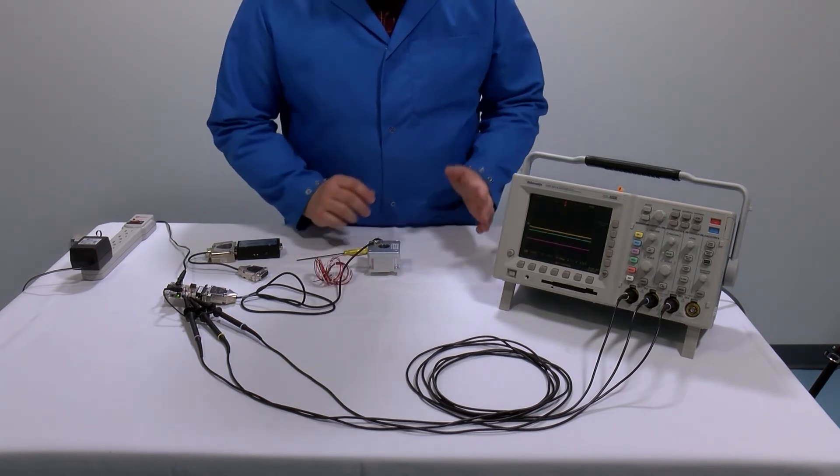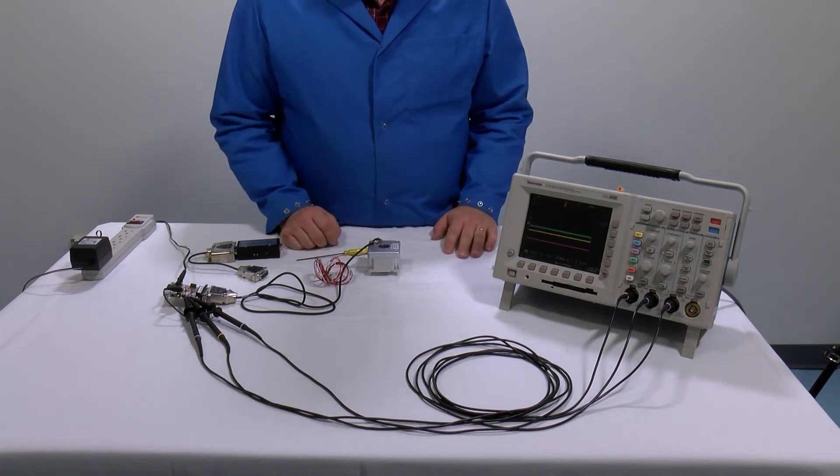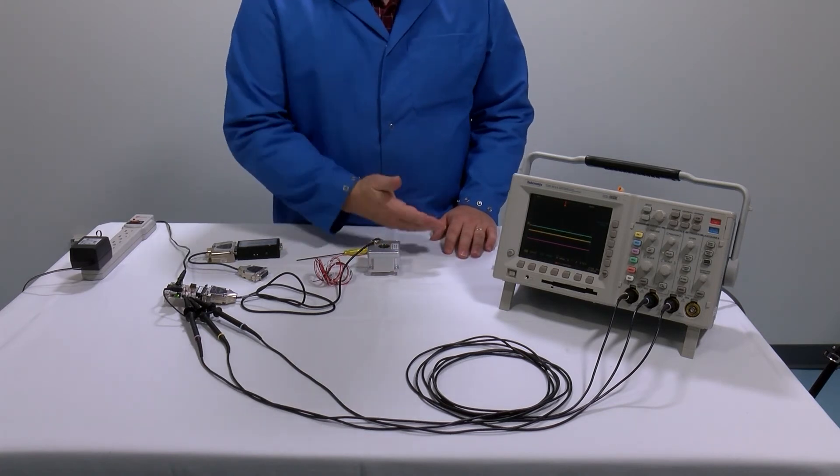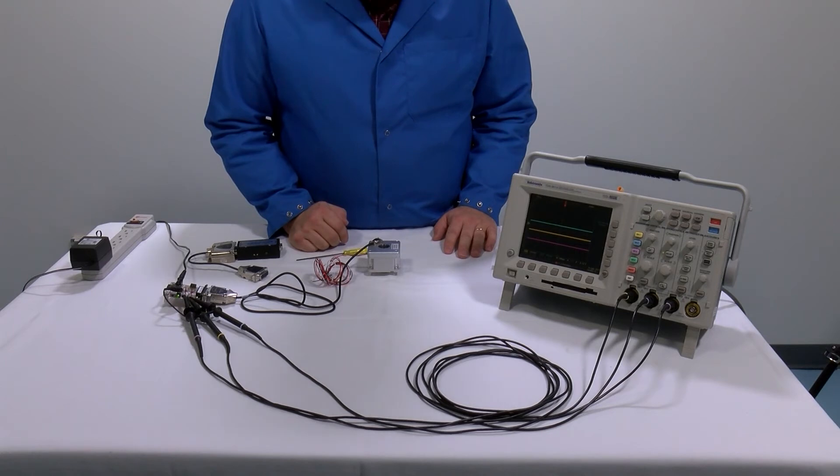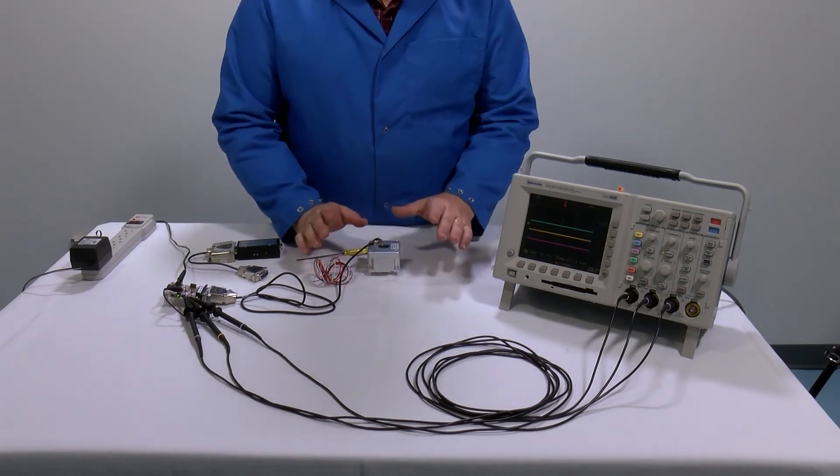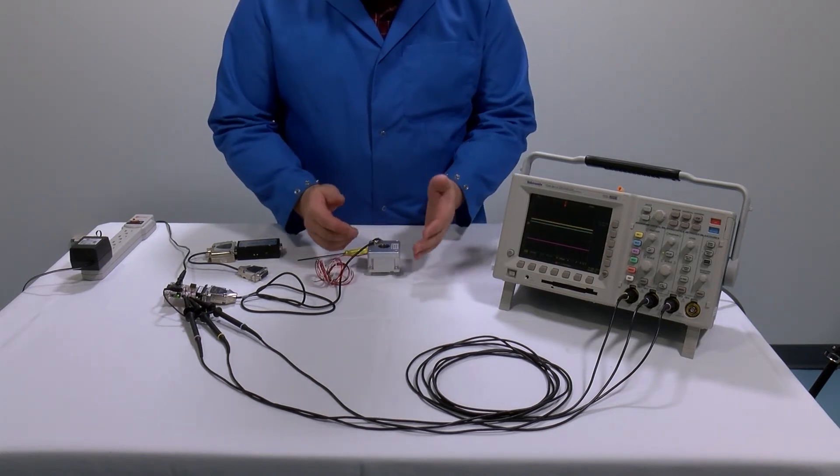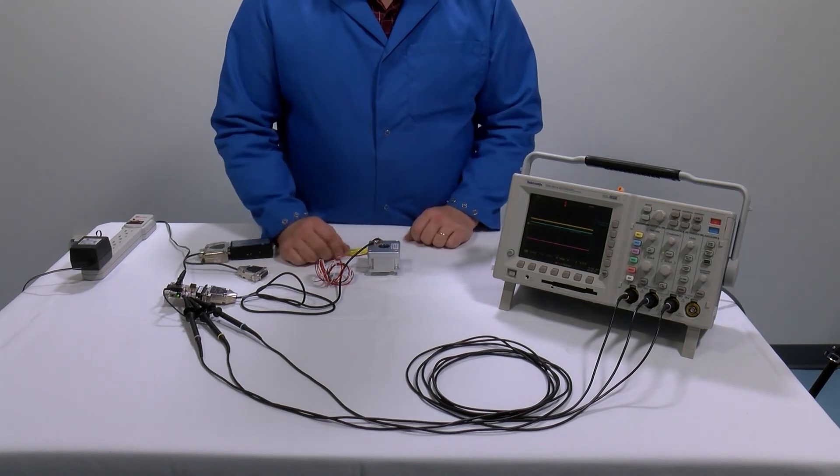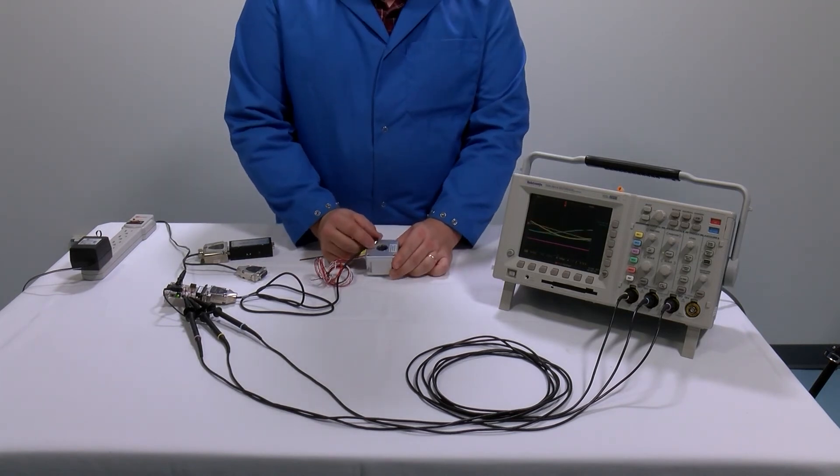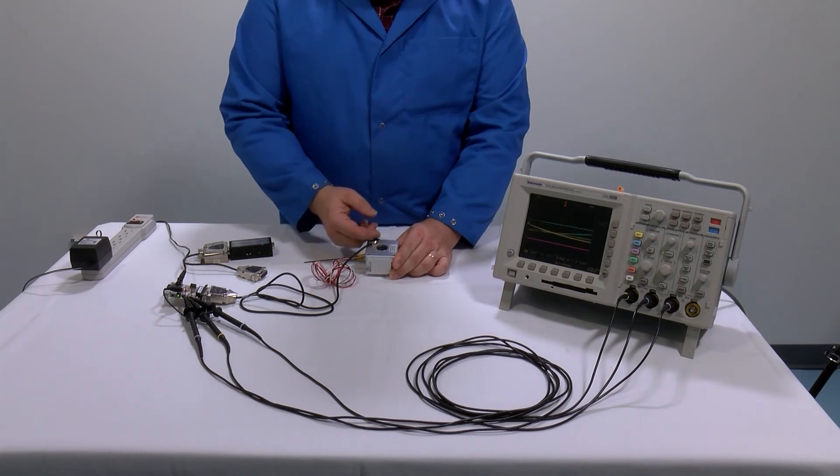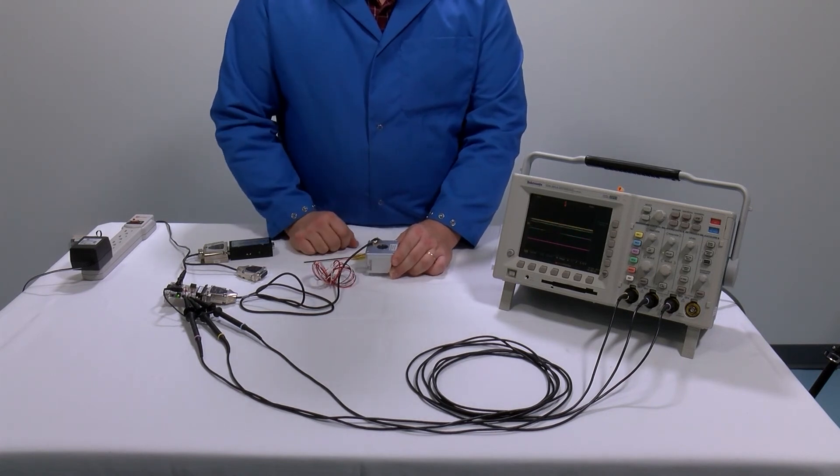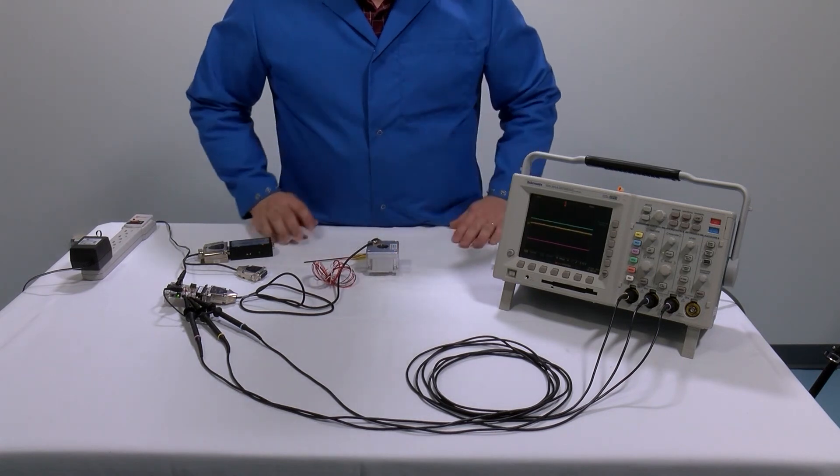Now if in the event you cannot get to at least 800 millivolts peak to peak and an index window trigger, that means there is something wrong with the setup and you'll need to either have the encoder replaced or perhaps you will need to remove the encoder head and check the scale for contamination. All right, thank you.